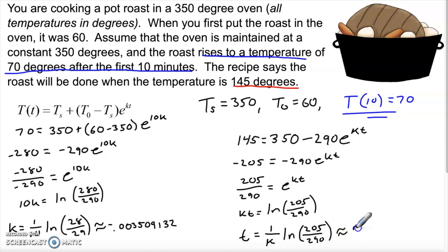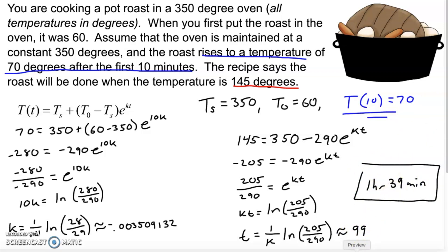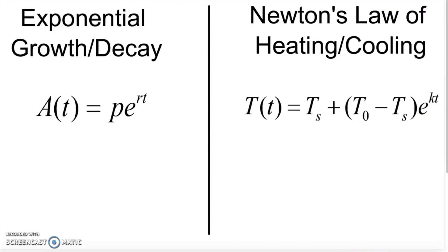Working through the algebra, t comes out to approximately 99 minutes. So we're going to have to wait about an hour and 39 minutes for this roast to be ready in the oven.